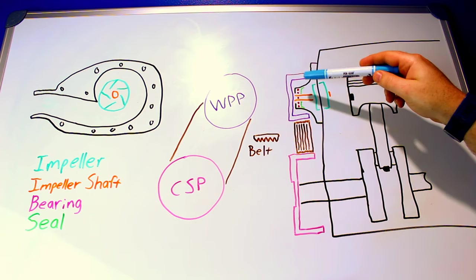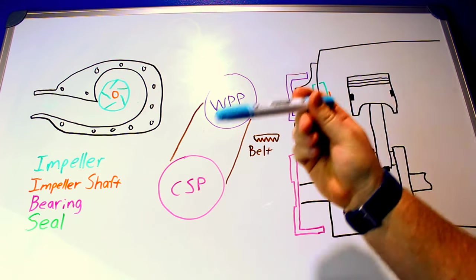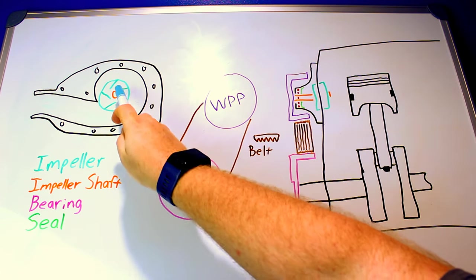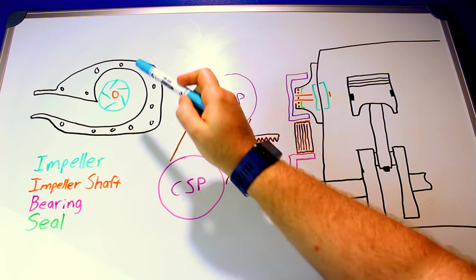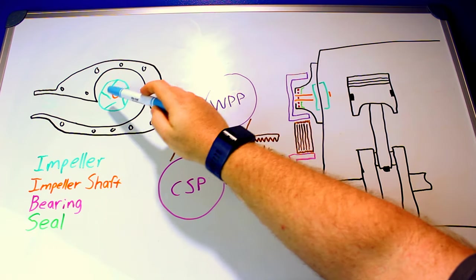So as you may have already put together this is a side view and this is a view from the back. On the back side liquid will be coming in down the center here and right into the middle of this impeller and water will be drawn in by the impeller and pushed out.